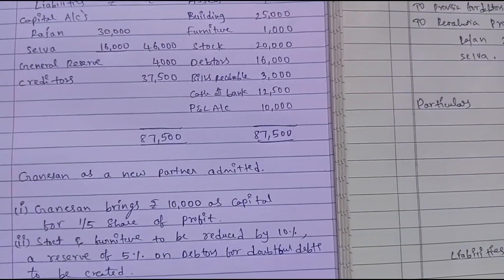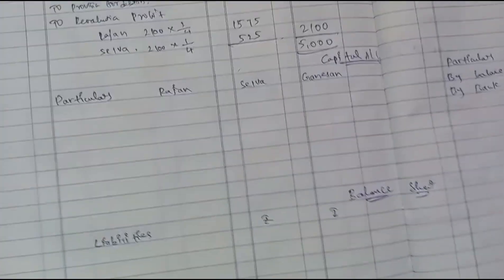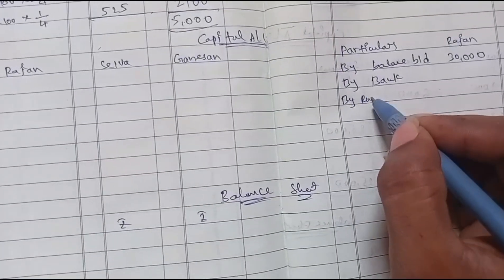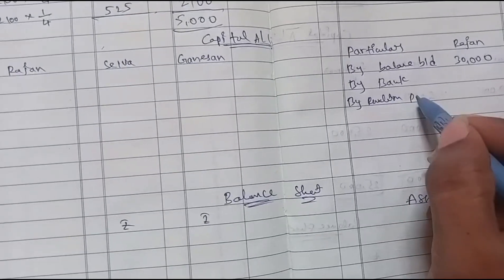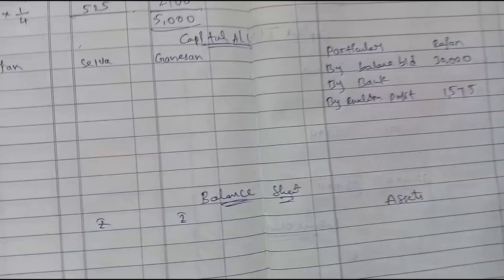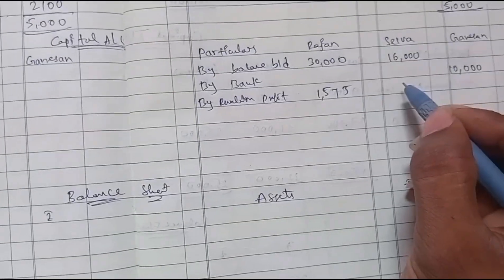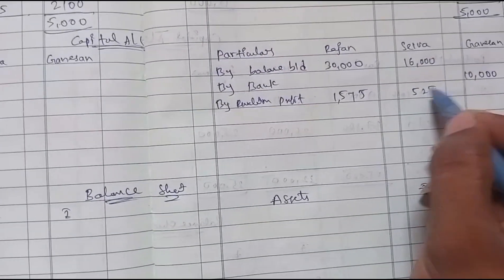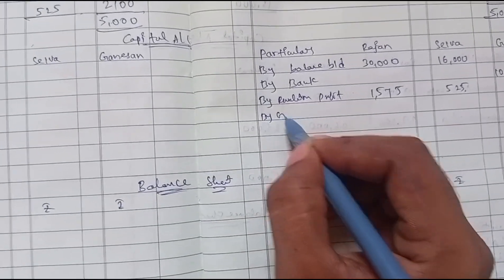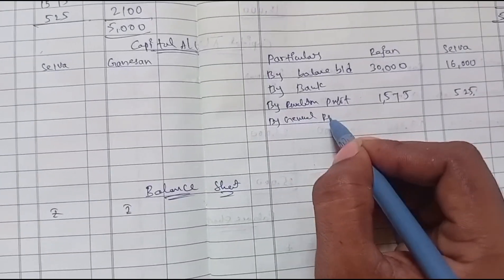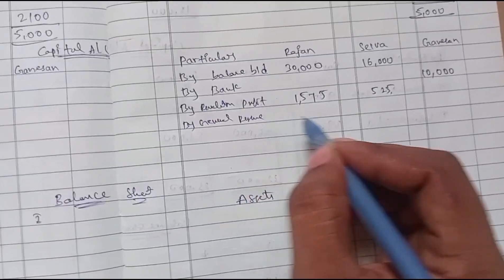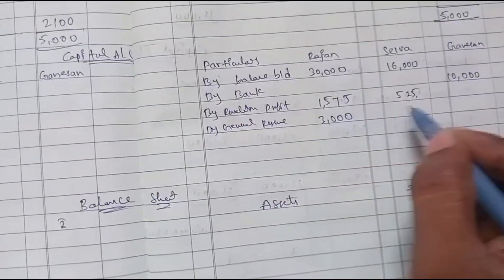Next, general reserve of 4,000 is distributed. Along with the revaluation profit, Rajan gets 1,575 and Selva gets 525 for revaluation. For general reserve in 3:1 ratio: Rajan gets 3,000 and Selva gets 1,000.